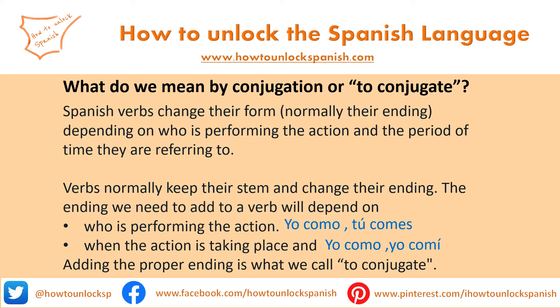I also have to choose the ending depending on when the action is taking place. For example, if I want to say 'I eat' — like I normally eat — I will say 'yo como', choosing the ending 'o', which is the present tense ending for I. But if I want to say 'I ate', I will say 'yo comí', choosing the ending 'í', which is the ending for doing something in the past. So adding the proper ending is what we call to conjugate.